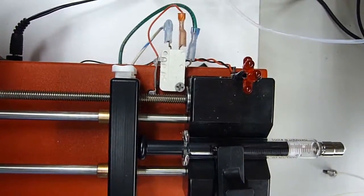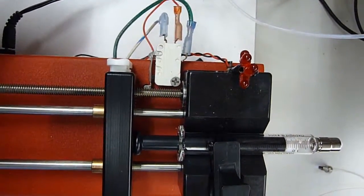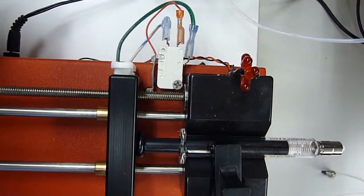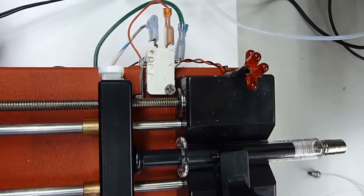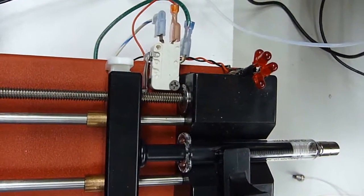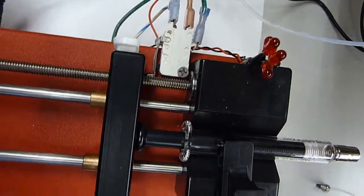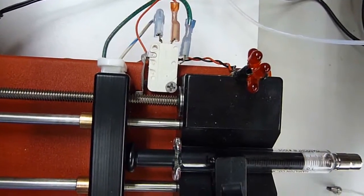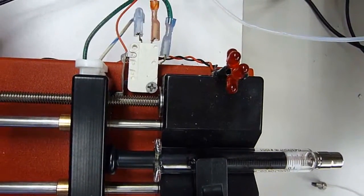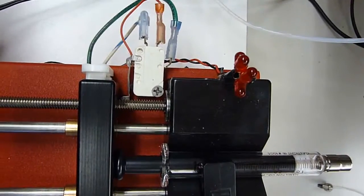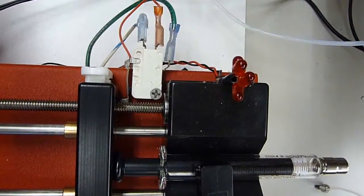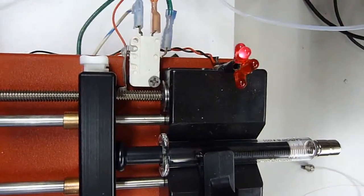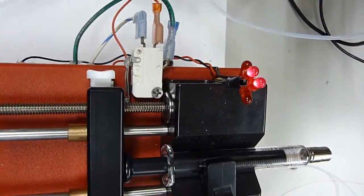As it starts getting close to the end here, you see the plunger's moving. It gets close to the end and it starts depressing the lever on the micro switch, and it stops pumping and the lights go on.